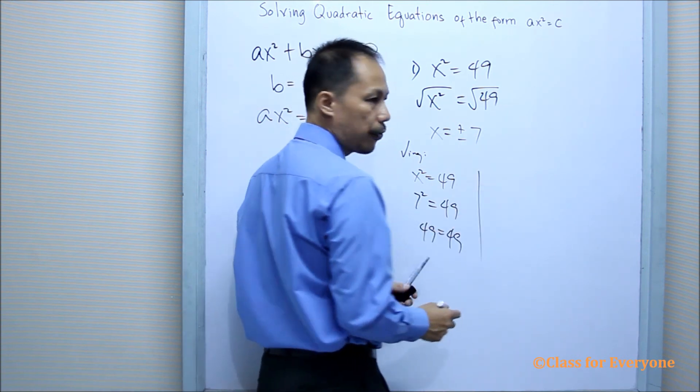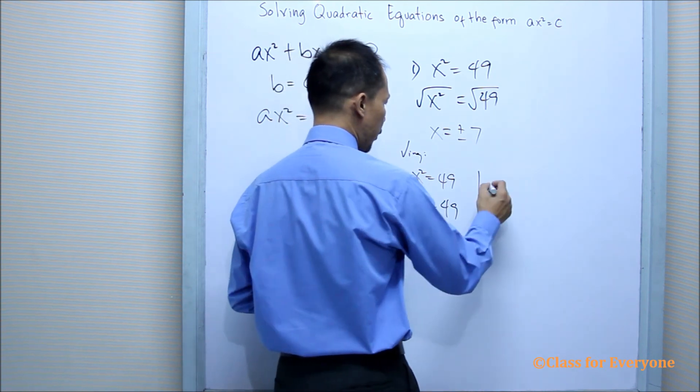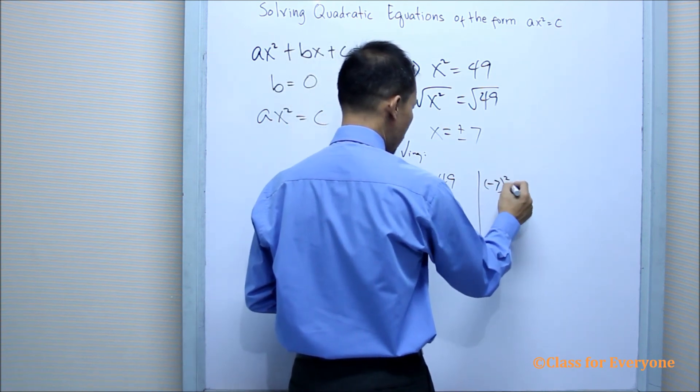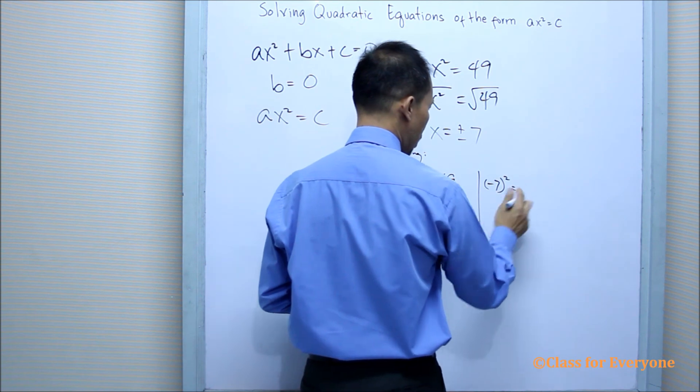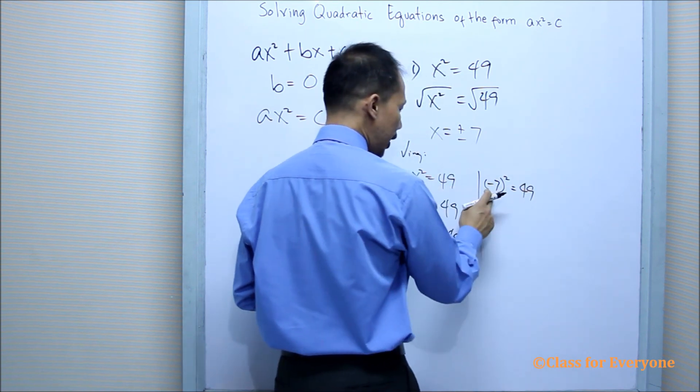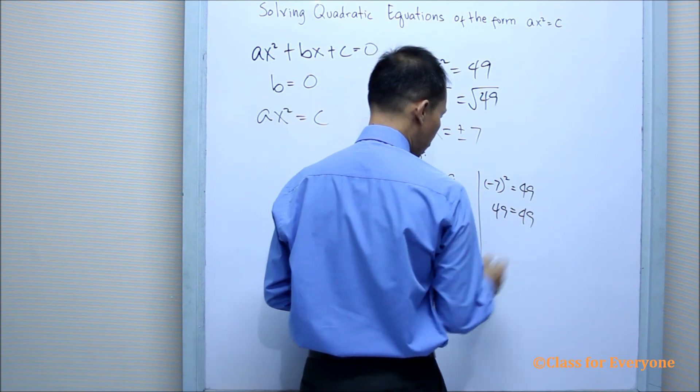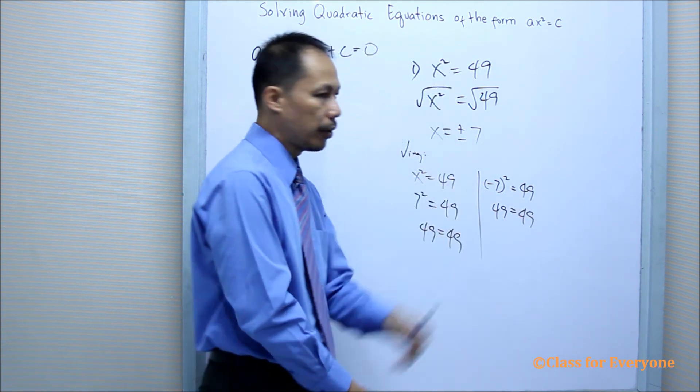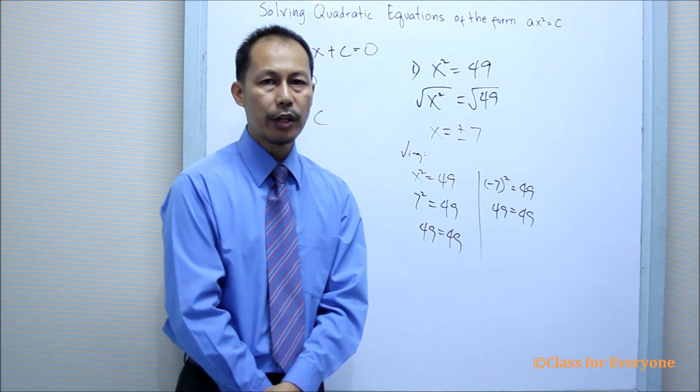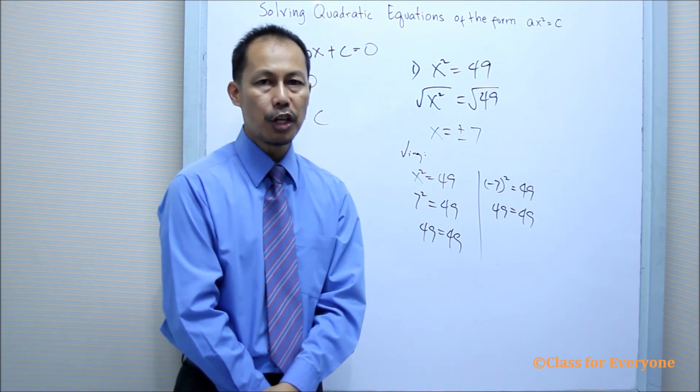What if x is negative 7? If it is negative 7, (-7)² = 49. Negative 7 times negative 7 is 49. It appears that both roots satisfy the equation. Therefore, the solution set is positive/negative 7.